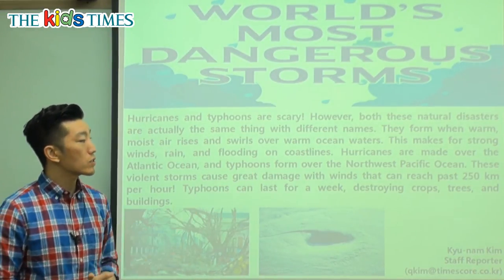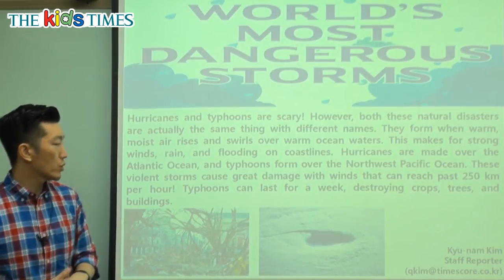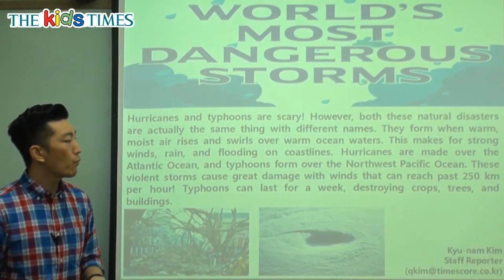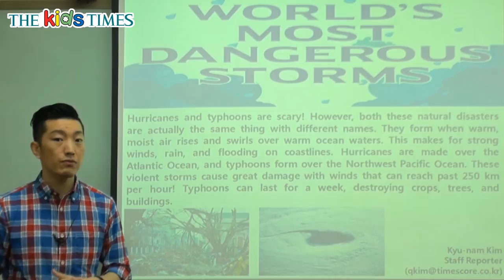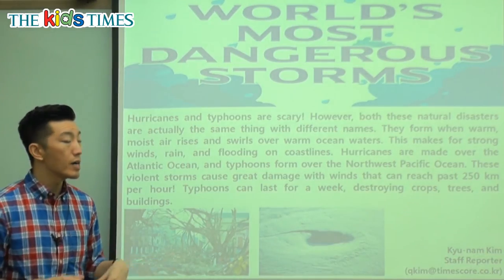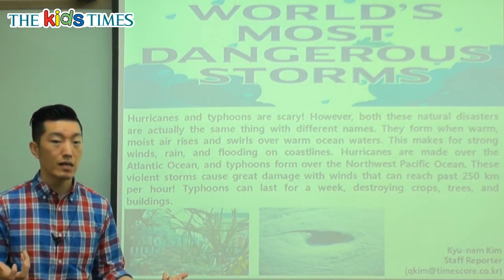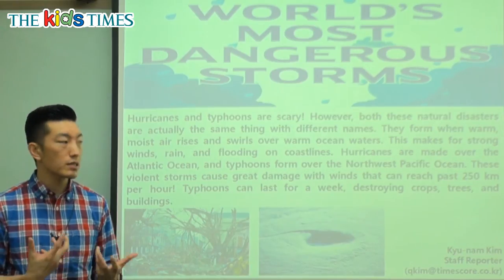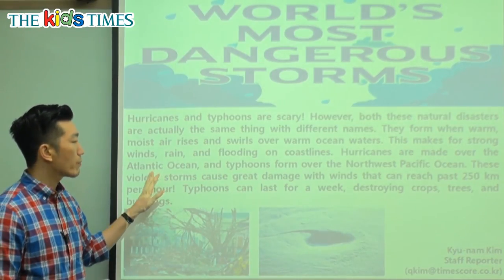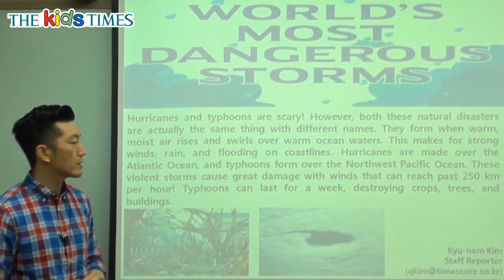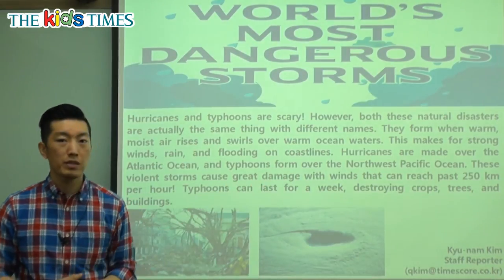Hurricanes are made over the Atlantic Ocean and typhoons form over the Northwest Pacific Ocean. So why do they have different names? Because they come from different places. They're essentially the same thing, but hurricanes form over the Atlantic and typhoons form over the Pacific.